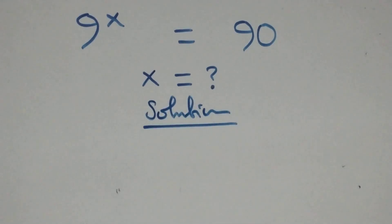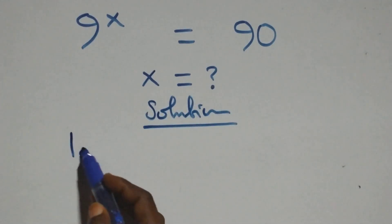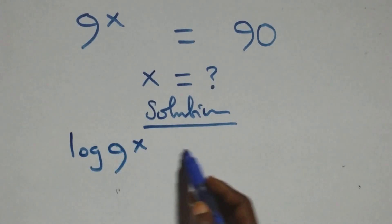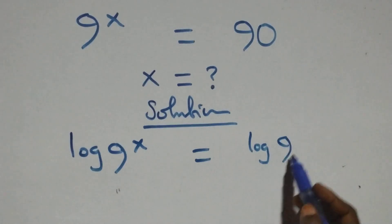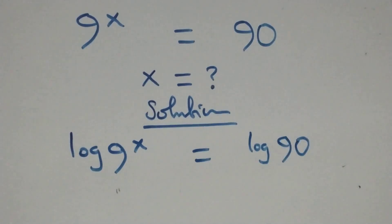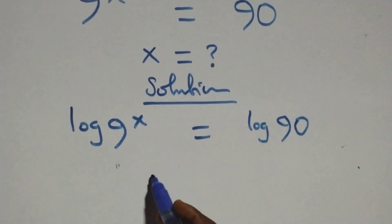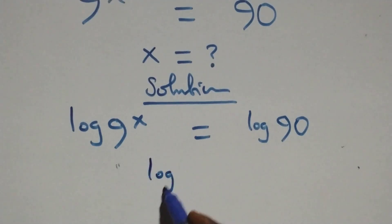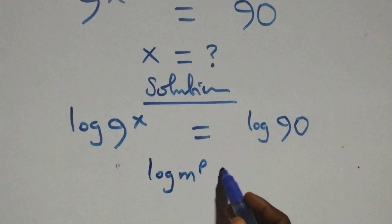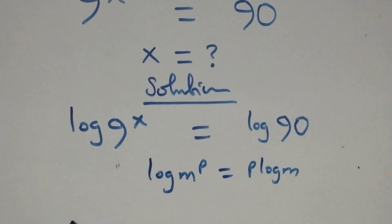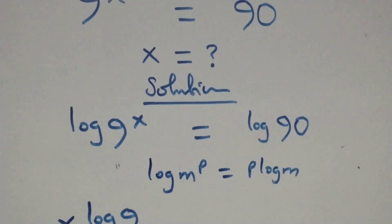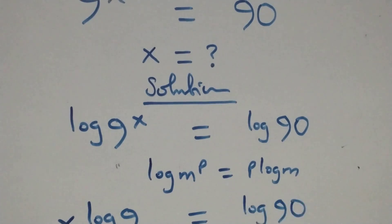And what we have here, we take the log on both sides. So we have log 9 raised to power x equals to log 90 on this side. Here we apply the power rule of logarithm: log m raised to power p is the same as p log m. So we have x log 9 equals to log 90.